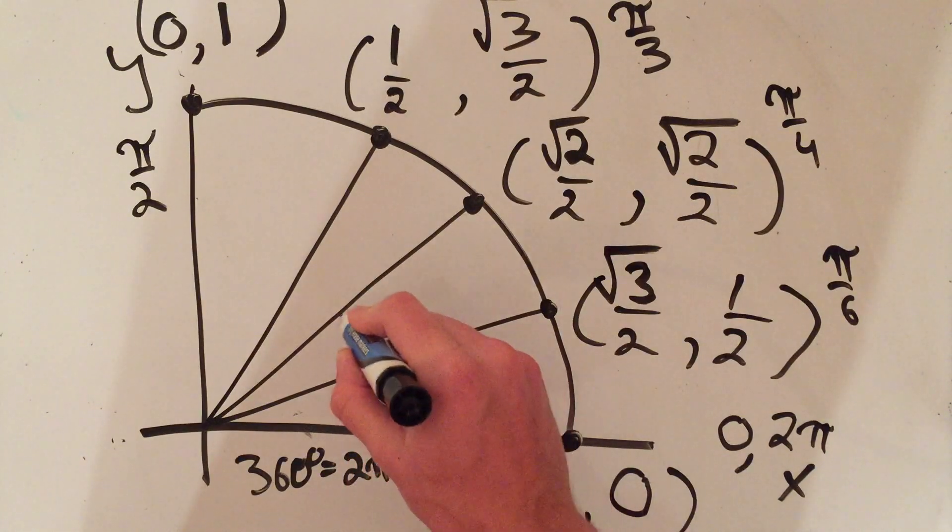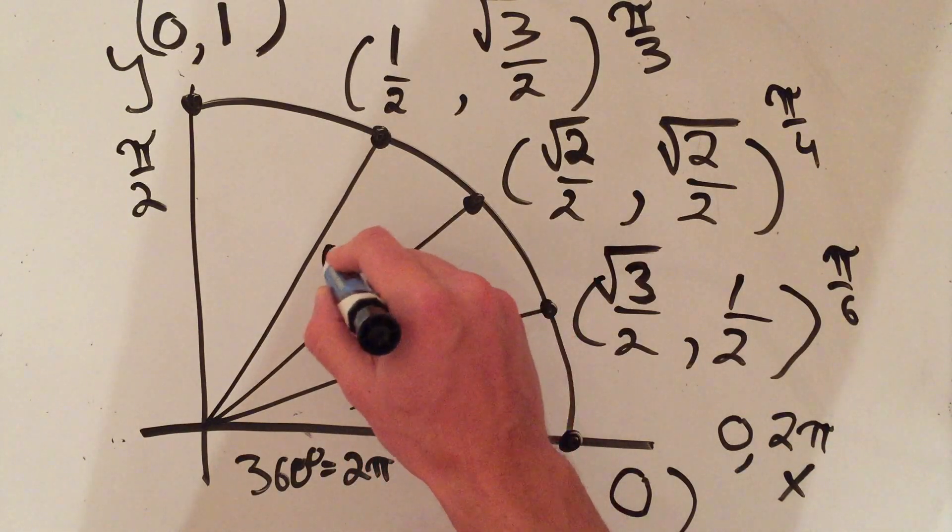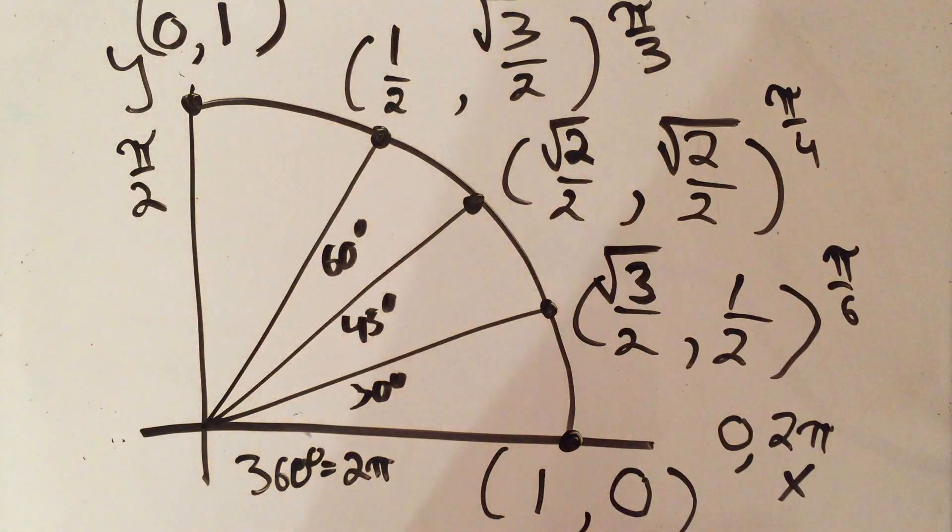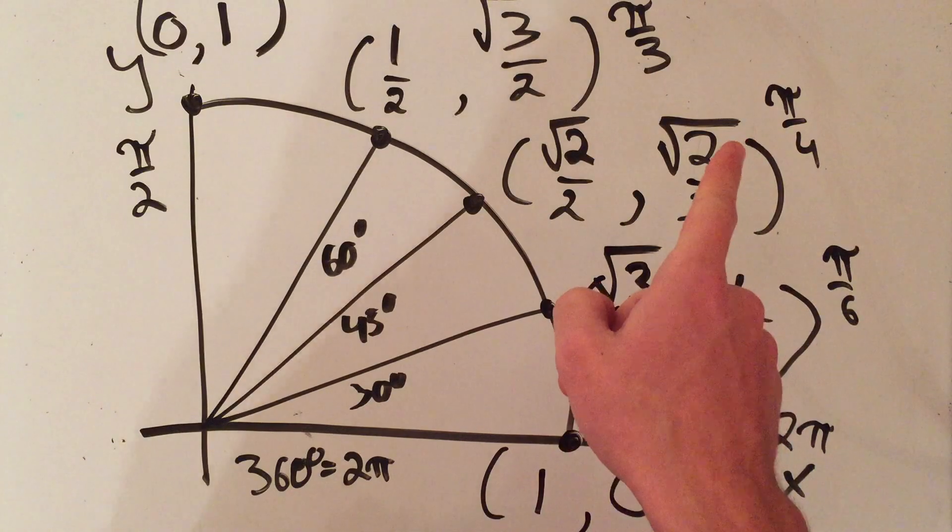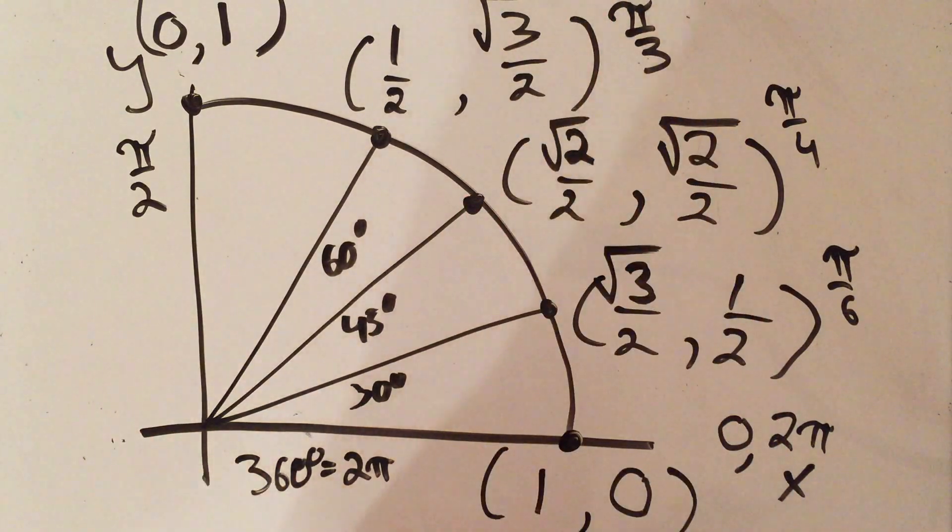I'll remind you if you'd like that this is 30 degrees, 45 degrees and 60 degrees. It's usually okay if you don't remember those. Those aren't often asked for in degree. Usually they're asked for like sine of π over 6, sine of π over 4, cosine of π over 3.